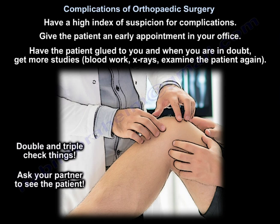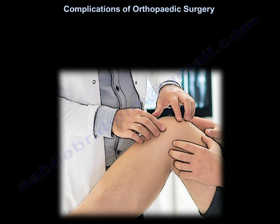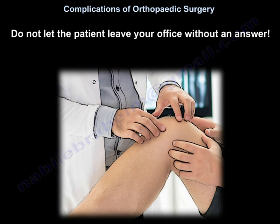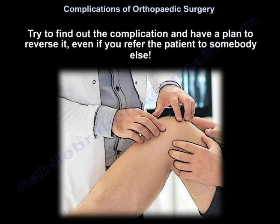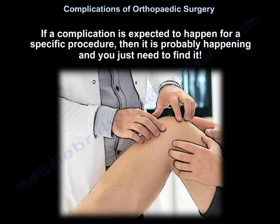Have a high index of suspicion for complications. Give the patient an early appointment in your office. Keep the patient close, and when in doubt, get more studies, blood work, x-rays, and examine the patient again — double and triple check. Ask your partner to see the patient. Do not let the patient leave your office without an answer. Try to find the complication and have a plan to reverse it, even if you refer the patient to someone else. If a complication is expected for a specific procedure, it is probably happening — you just need to find it.